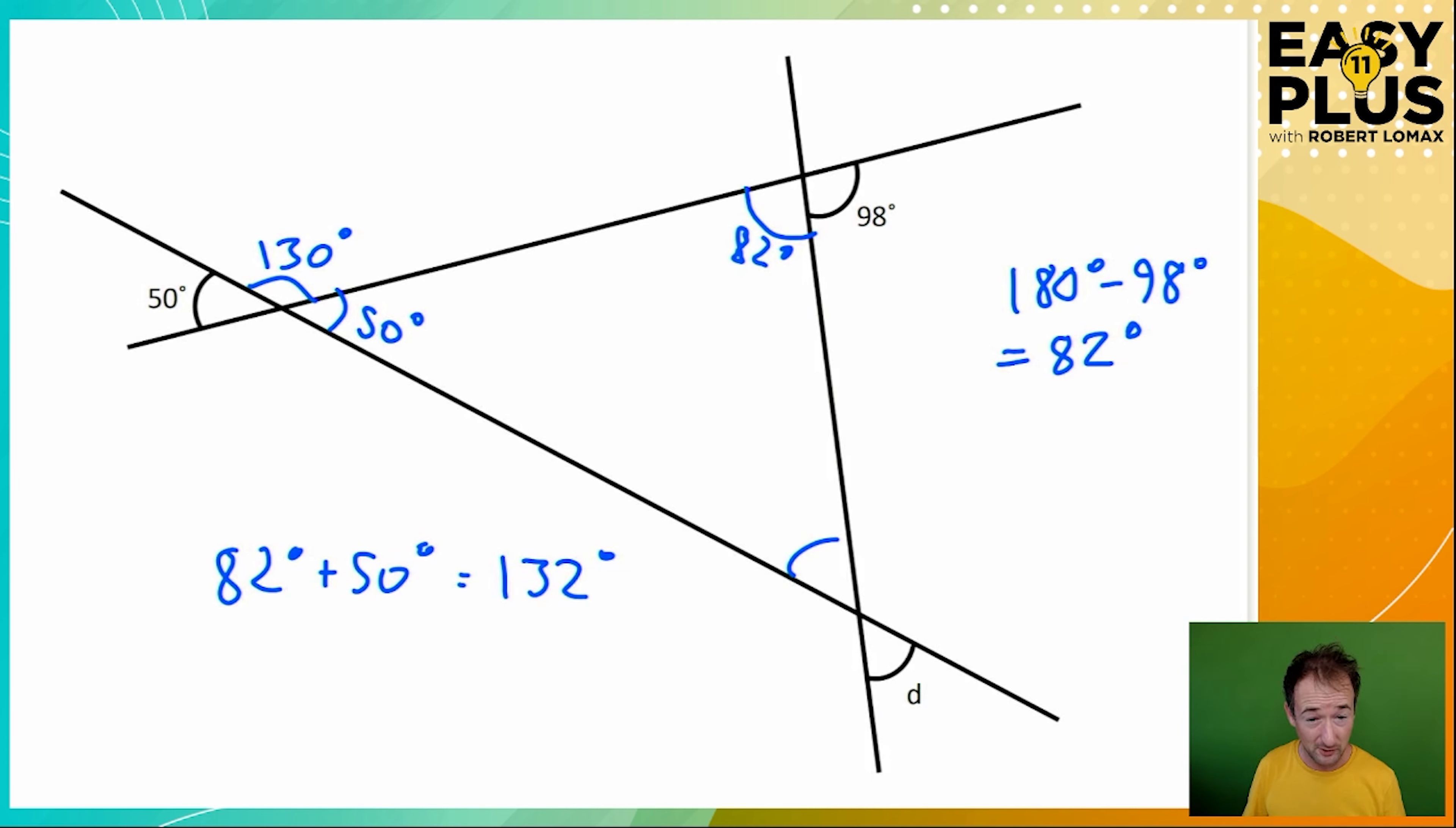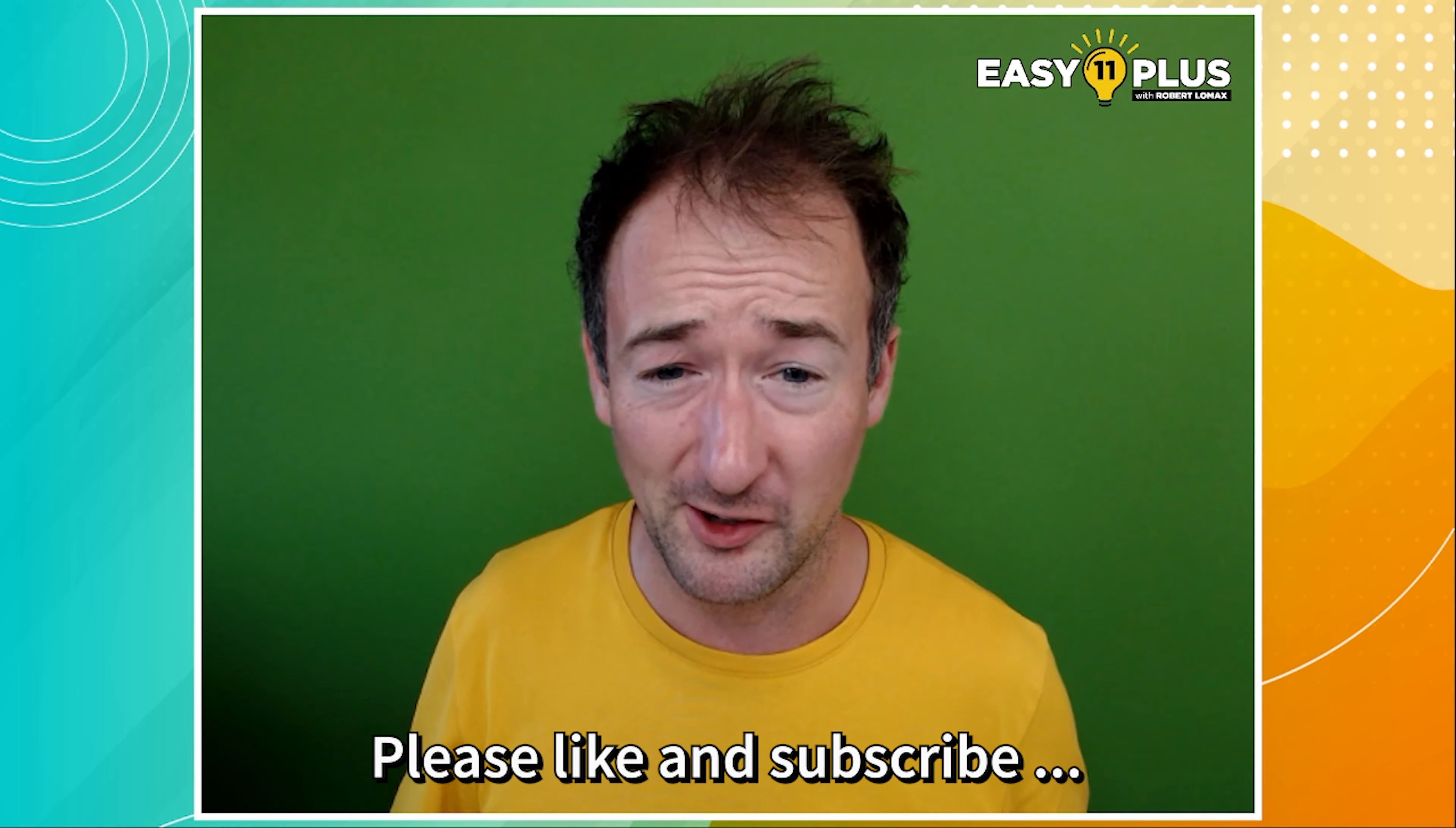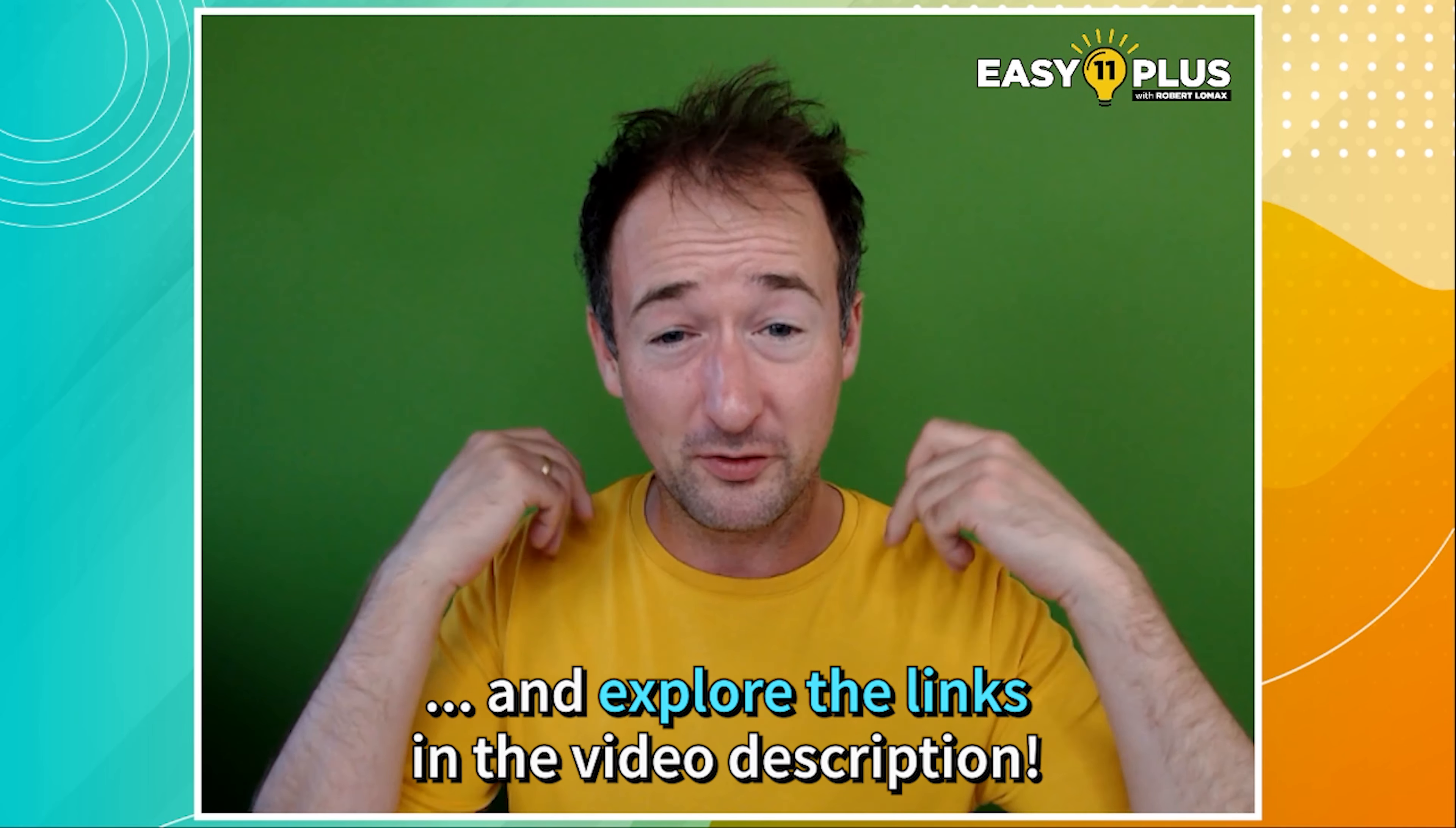And now we know that two of the angles inside this triangle are 50 degrees and 82 degrees. And so to find this angle down here, because there are 180 degrees in total in a triangle, we just need to do, which gives us 48 degrees. Now from what we've just learnt working in this corner up here, angles opposite to each other across a pair of intersecting lines are the same. And so if this is 48 degrees, then D must also be 48 degrees. And that's it.